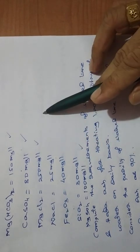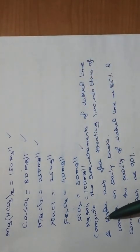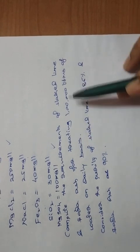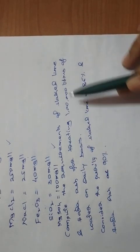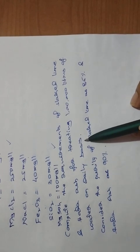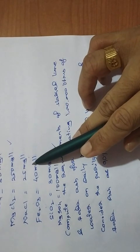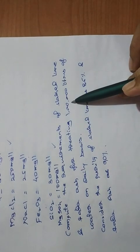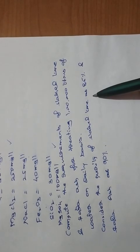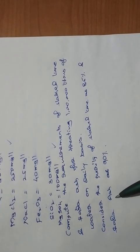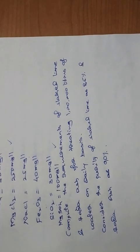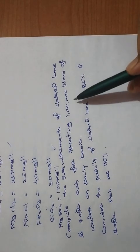Compare the requirement of slaked lime and soda ash for treating 1 lakh liters of water on a daily basis. That means this water is having these characteristics, and the quantity of water that needs to be treated is 1 lakh liters on a daily basis.